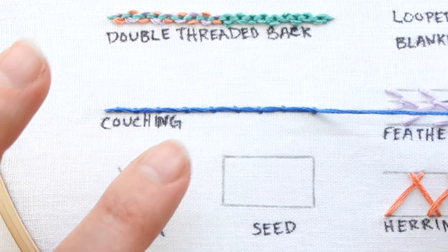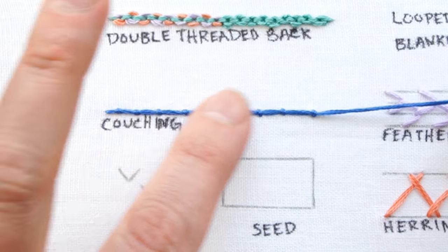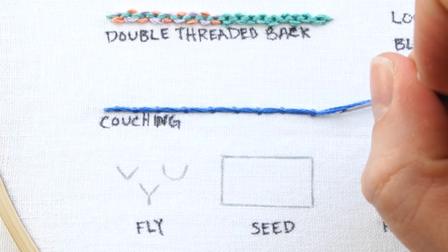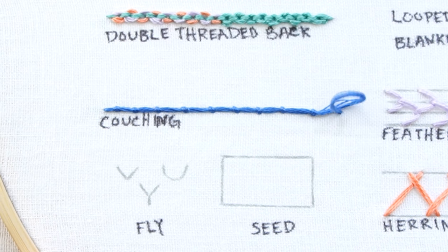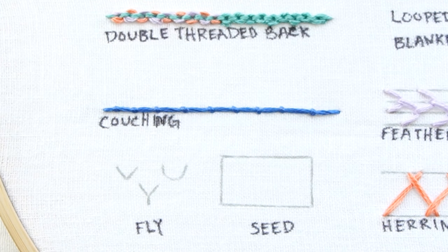When you get to the end of the line, put a needle on the thread that you've had laying across here and take it to the back of your work and secure it. That is how you do couching.